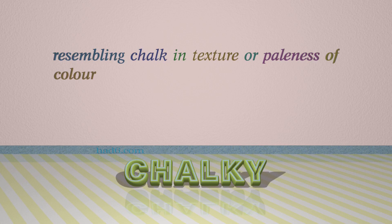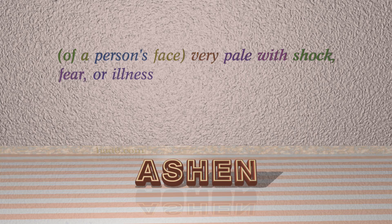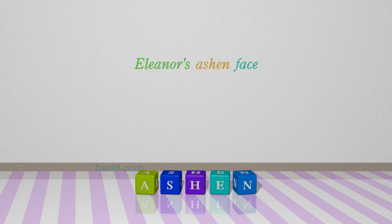Number 6: Chalky. Number 7: Ashen. Which means of a person's face very pale with shock, fear, or illness. For example: Eleanor's ashen face.